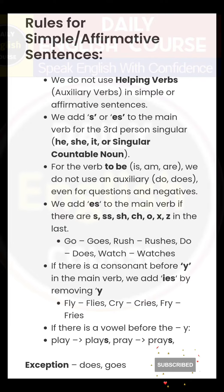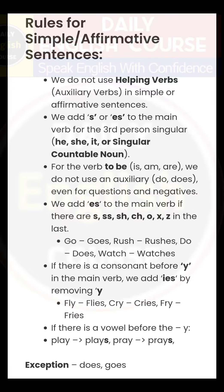For the verb 'to be' — is, am, or are — we do not use an auxiliary do or does, even for questions and negatives.